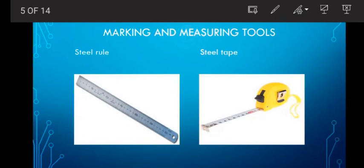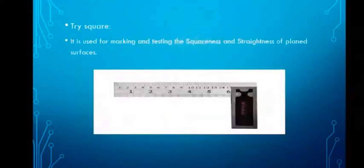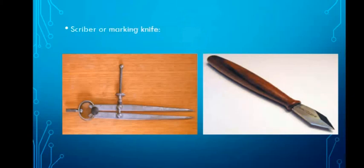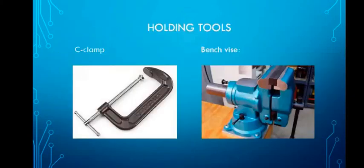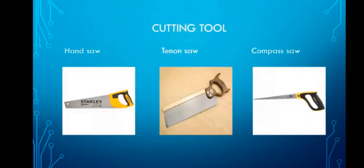What are the measuring tools? Steel rule, steel tape, marking gauge, try square, scriber or marking knife. Then there are holding tools: C clamp, bench vise. Then planing tools, material removing tools: jack plane, smoothing plane. Then there are cutting tools: hand saw, tenon saw, compass saw. These are different types of saws used for cutting. Applications depend on size and shape.